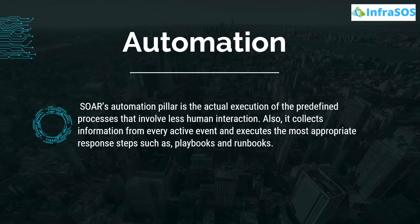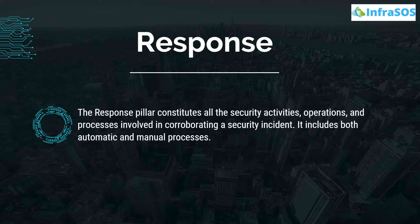The second pillar is automation. SOAR's automation pillar is the actual execution of predefined processes that involve less human interaction. It collects information from every active event and executes the most appropriate response steps, such as playbooks or runbooks. The third pillar is response, which constitutes all the security activities and processes involved in corroborating a security incident, including both automatic and manual processes.